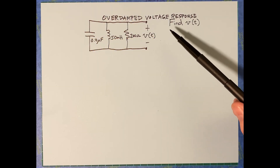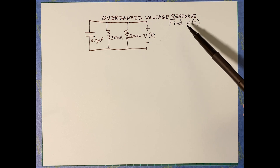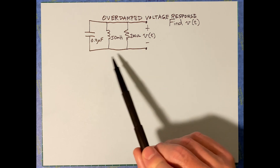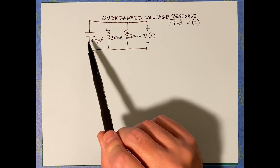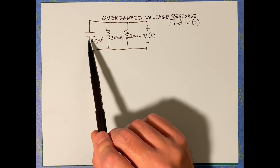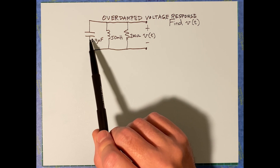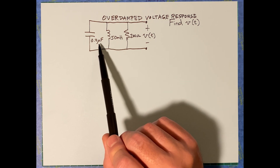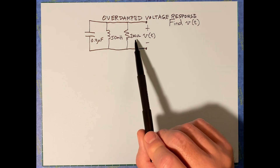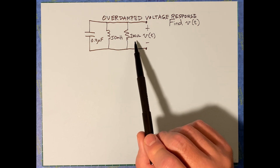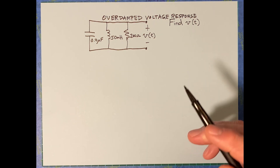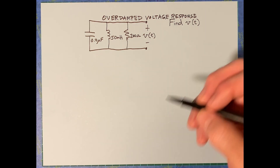This is the overdamped voltage response. We have a natural response problem because there is some initial energy in the capacitor. At t equals zero we have a 0.2 microfarad capacitor on the left, a 50 millihenry inductor in the center, and a 200 ohm resistor on the right. The voltage across all of those elements is what we're trying to find, and we know it changes over time.